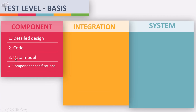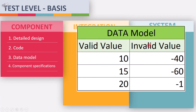The third requirement is data model. In component testing, we validate the component of the software by providing different data — both valid and invalid — to verify if the component behaves as expected.